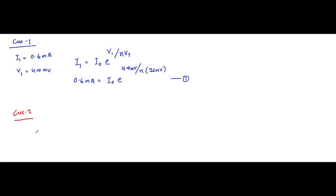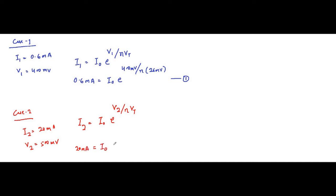Case 2: the current flowing is 20 milliampere and the applied voltage is 500 millivolt. The diode equation here is: I₂ = I₀ · e^(V₂ / η·Vt), giving 20 mA = I₀ · e^(500 mV / η × 26 mV). This is equation two.